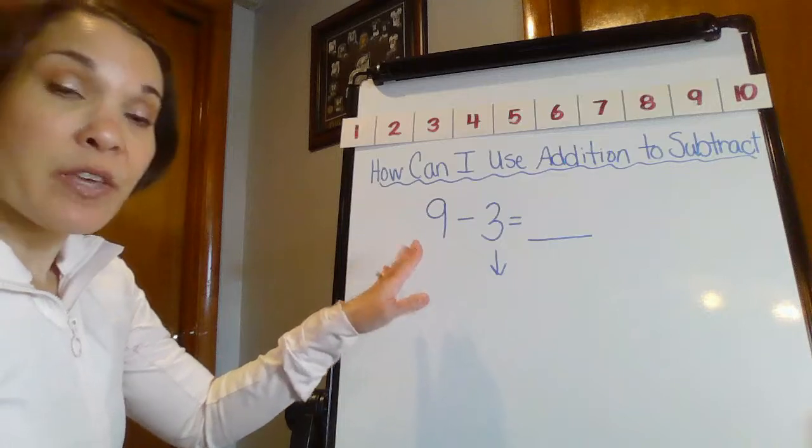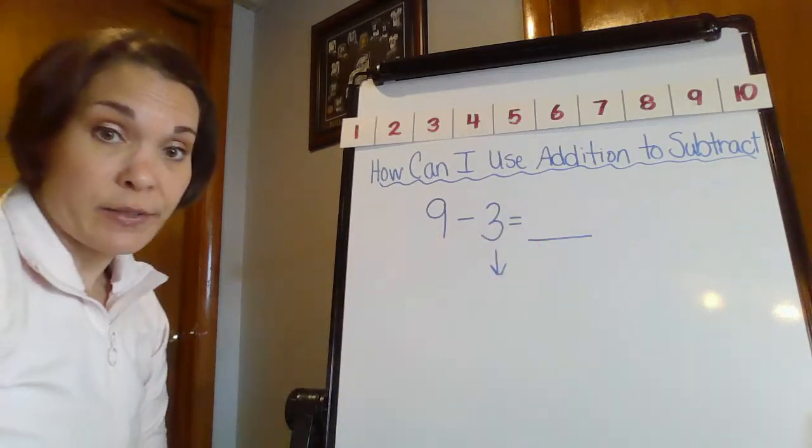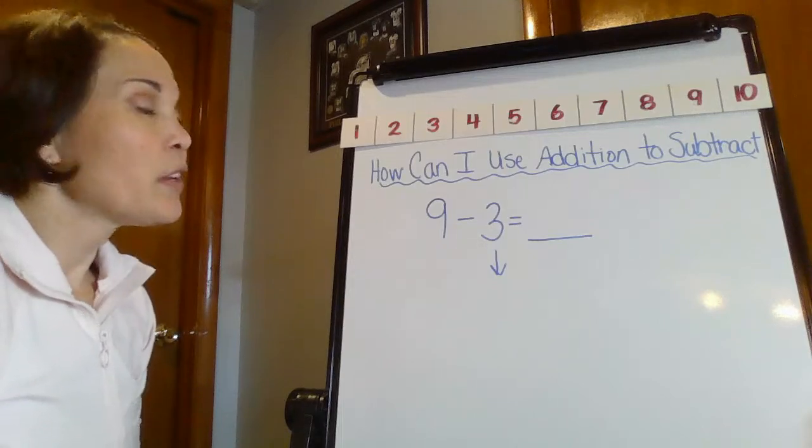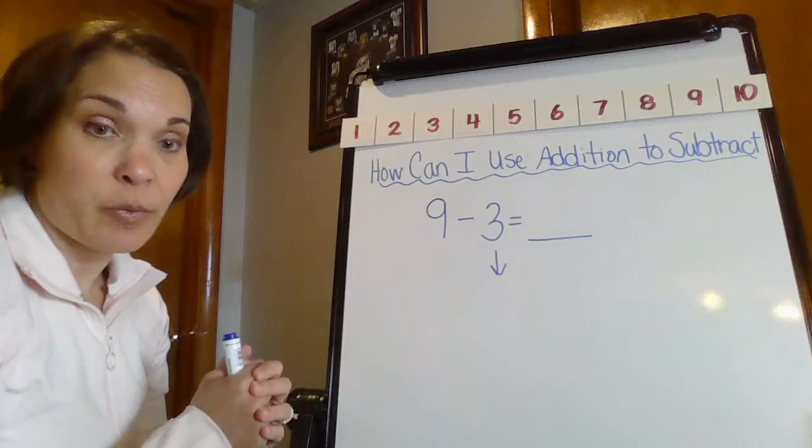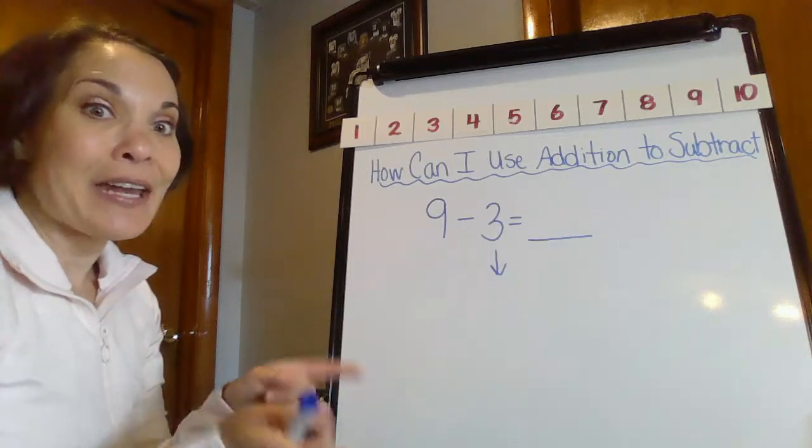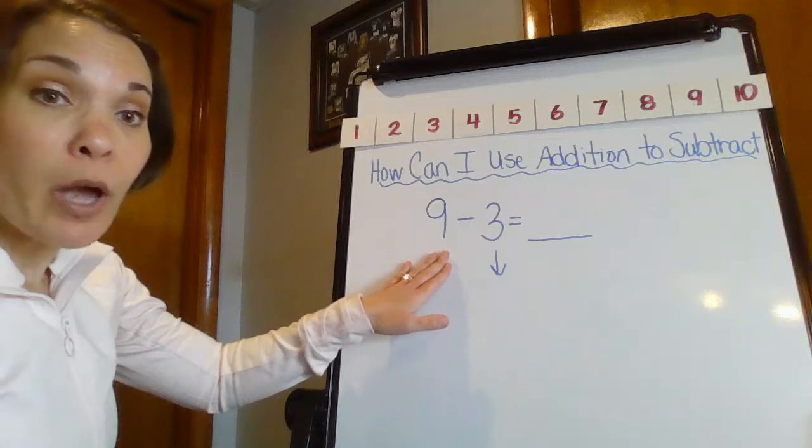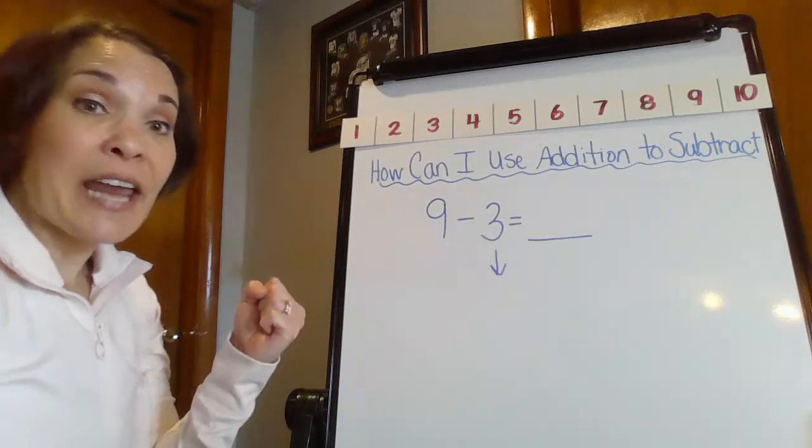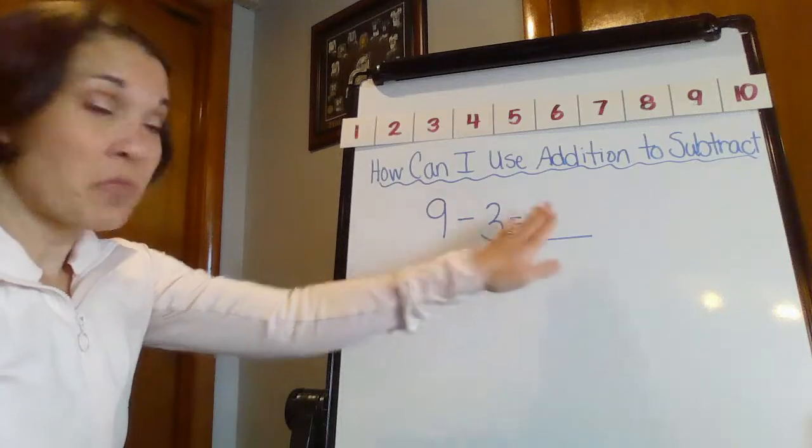Right now I have the equation 9 minus 3 equals what? So there's a couple ways I could figure this out just by looking at the subtraction number sentence. I can count back. I could put that big number in my brain, that whole number, 9, and count back 3: 8, 7, 6. Okay, got that.